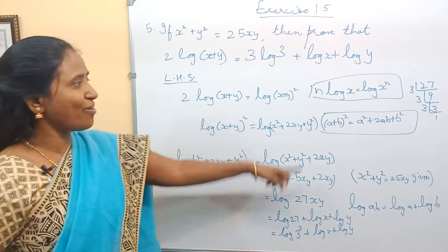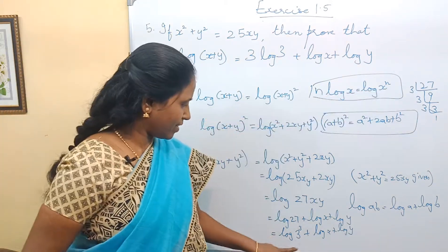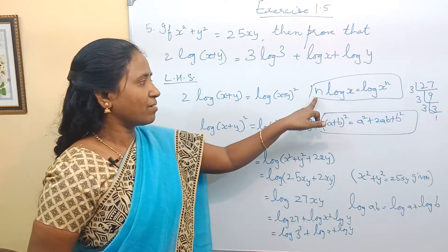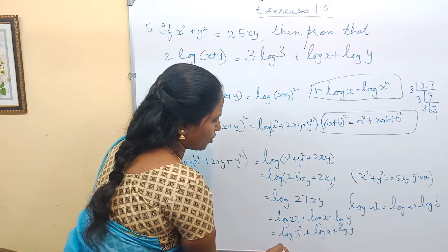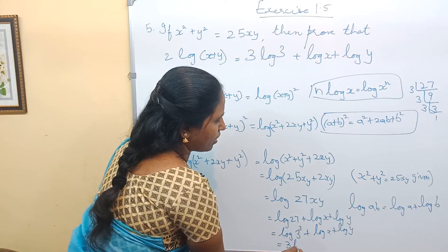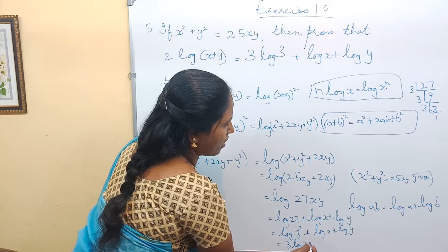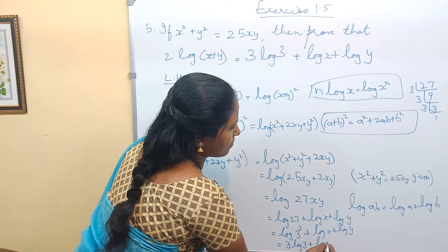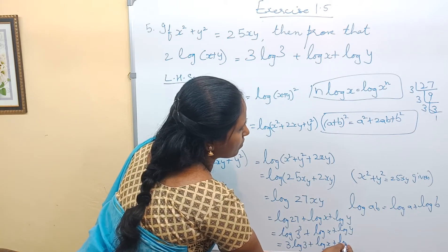So this is in the form log x^n, that is nothing but n log x. So log 3³ is nothing but 3 log 3 + log x, then log y.